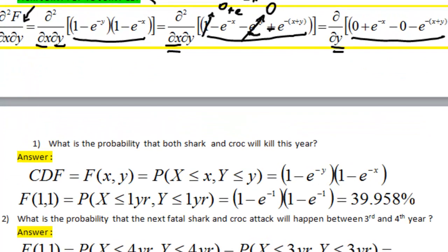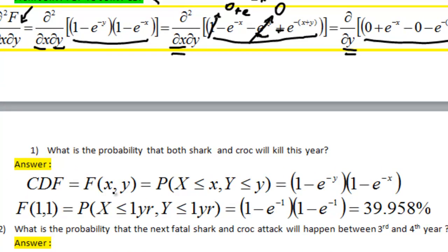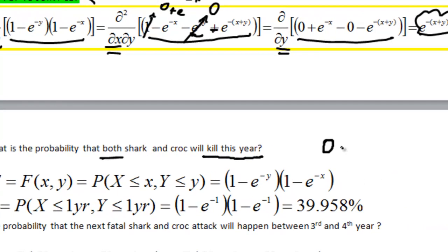So for instance, we want to know the probability that both, because we are dealing with joint CDF, so we are deriving joint probabilities that both shark and croc will kill this year. So we are at time 0, and we want to know the probability that both shark and croc will kill this year.